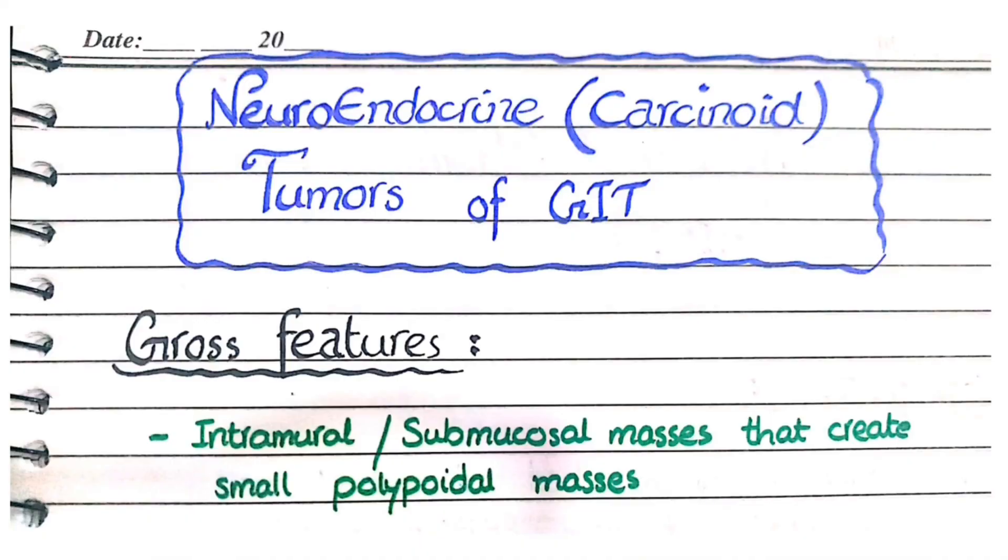This concludes the pathological features of neuroendocrine tumors of the GIT or carcinoid tumors of the GIT.